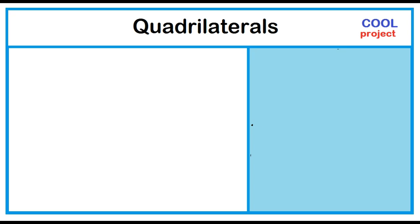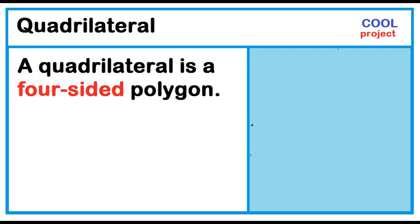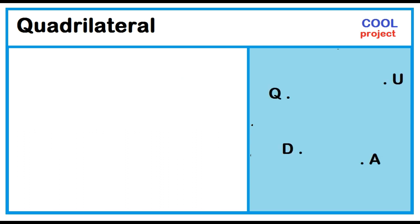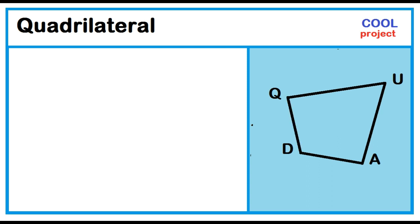Quadrilaterals. A quadrilateral is a four-sided polygon. Points Q, U, A, and T are planar points. The four points are joined by segment QU, segment UA, segment AD, and segment DQ. The union of these four segments is called a quadrilateral.